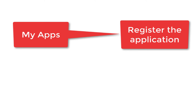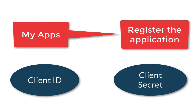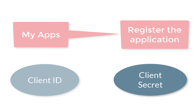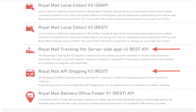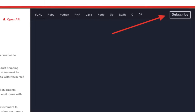When you register, your application is assigned a unique client ID and client secret. After you register, head over to the Royal Mail API portal and subscribe to the shipping and tracking API respectively.